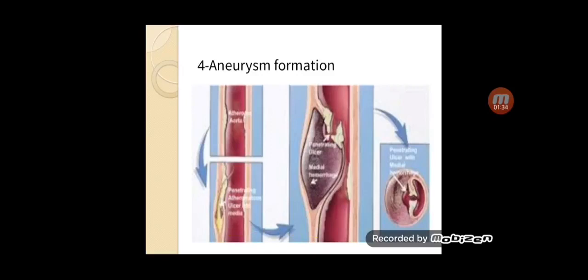Aneurysm formation in atherosclerosis is due to mechanical weakening of the aortic wall through loss of elastic recoil and degenerative ischemic changes from obstruction of the vasa vasorum. This weakening of the blood vessel wall with loss of elastic recoil leads to aneurysm development.